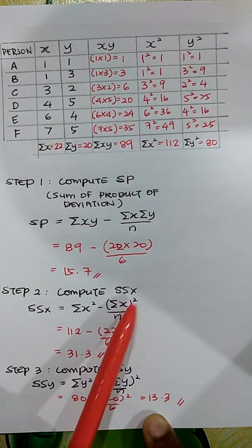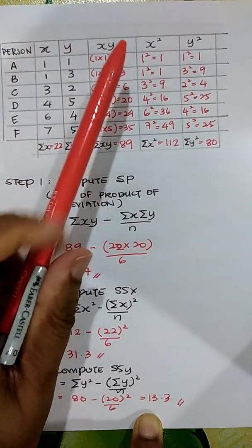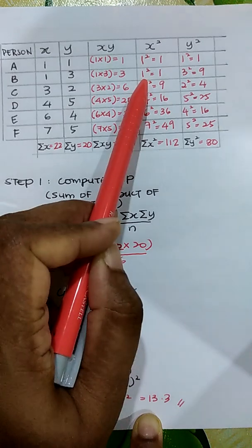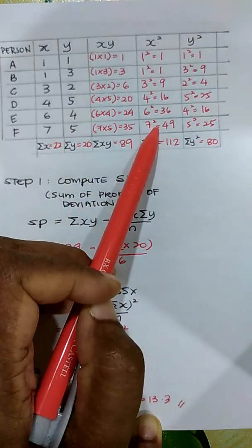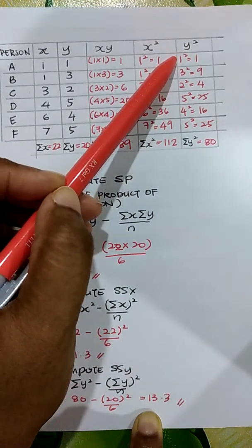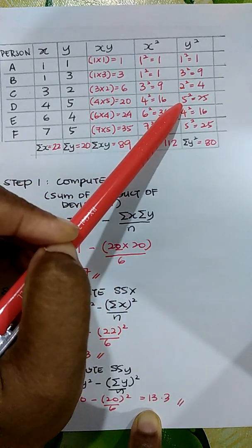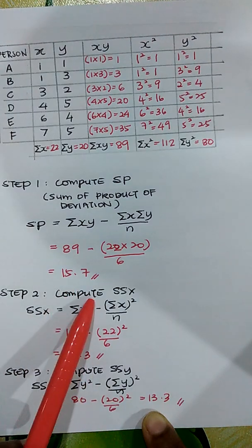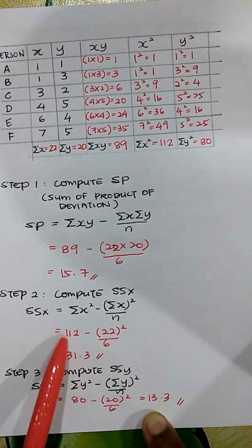To compute sum of squares X, square all the X values: 1²=1, 1²=1, 3²=9, 4²=16, 6²=36, 7²=49. Adding these gives sum of X² = 112. Similarly for Y: 1²=1, 3²=9, 2²=4, 5²=25, 4²=16, 5²=25. Adding these gives sum of Y² = 80.